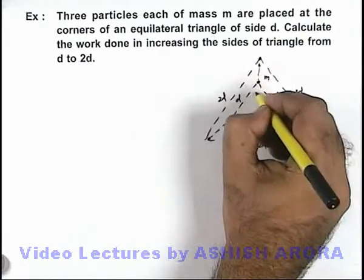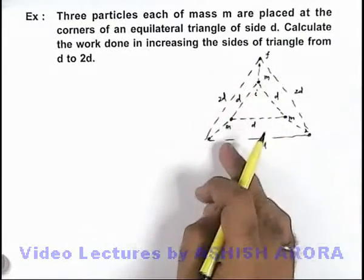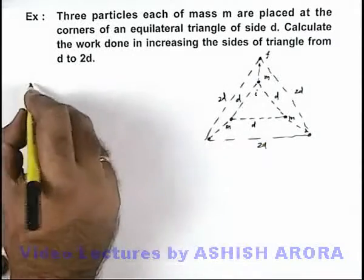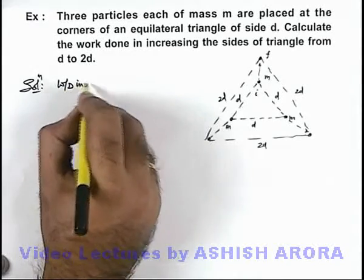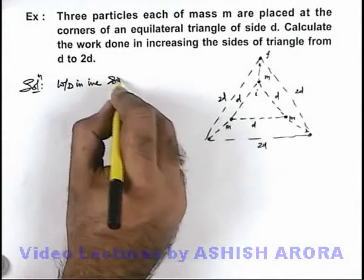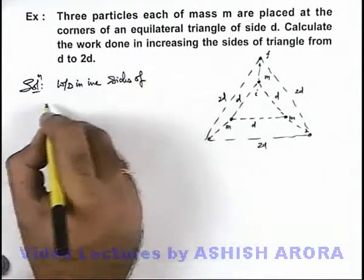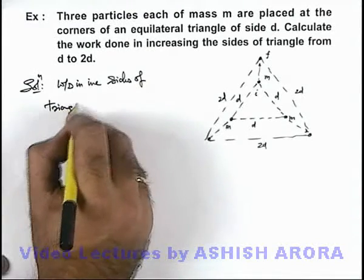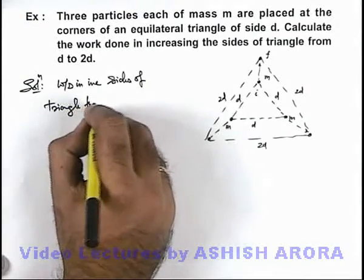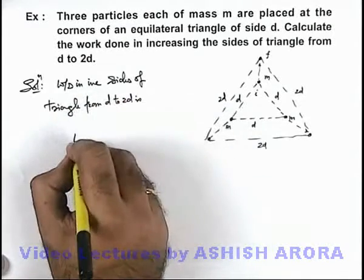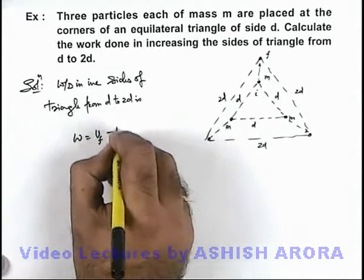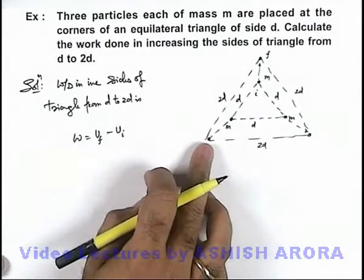So from initial to final situation we are required to find the work done. In this solution we can directly write: work done in increasing sides of triangle from d to 2d is... this work done can directly be written as final energy minus initial energy of the system of particles.